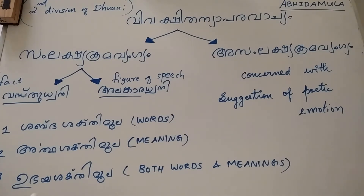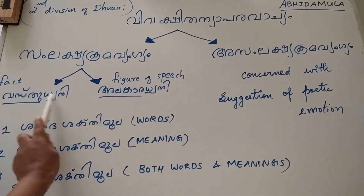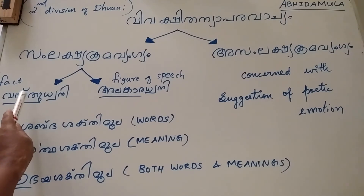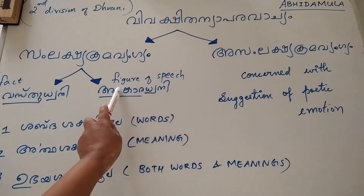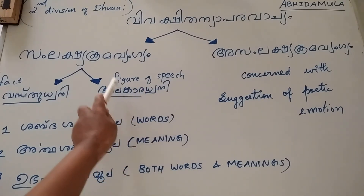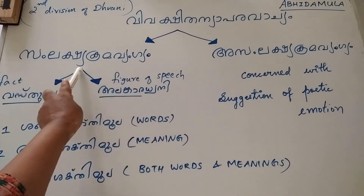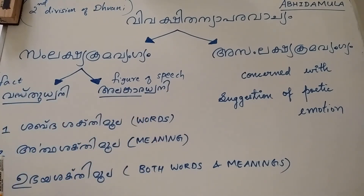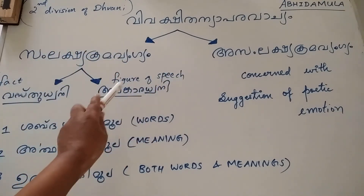Samlakshya Krama Vangya can be subdivided into two: Vastu Dhvani and Alankara Dhvani. If a fact is being suggested, then we call it Vastu Dhvani. If what is being suggested is an alankara, or a figure of speech, then it becomes Alankara Dhvani. So Samlakshya Krama Vangya is classified into Vastu Dhvani and Alankara Dhvani based on what is being suggested.